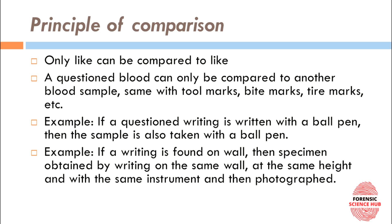Also, if you have a questioned writing written with a ball pen, then the specimen sample you are going to take must also be taken with a ball pen only — not a gel pen or fountain pen. Another example: if a writing has been found on a wall, then the specimen sample must also be taken on a wall, not on paper. The orientation of your hand changes when writing on a wall, which can modify your handwriting, so you need to be exact with what you are comparing.